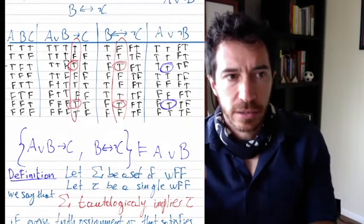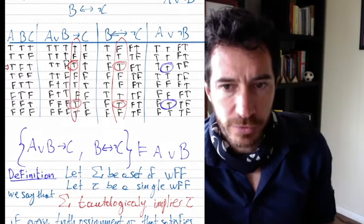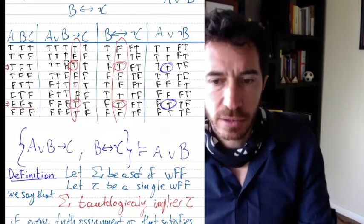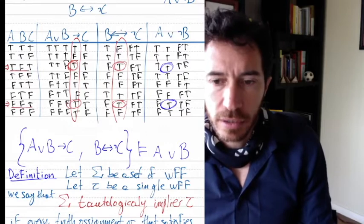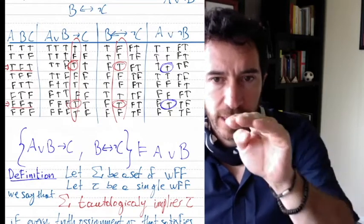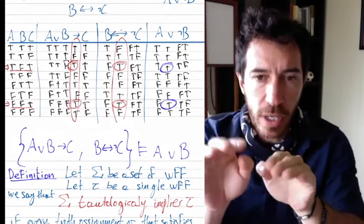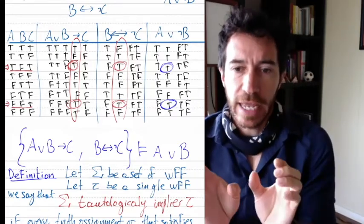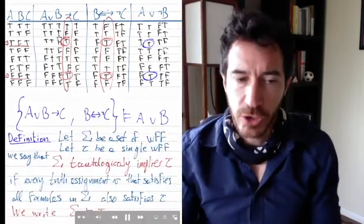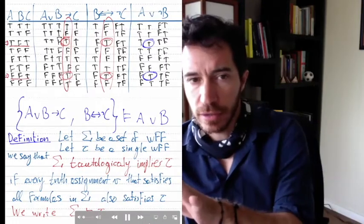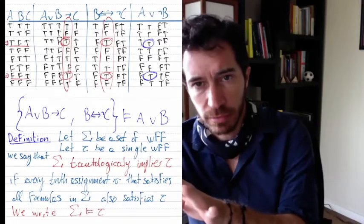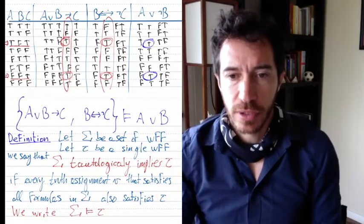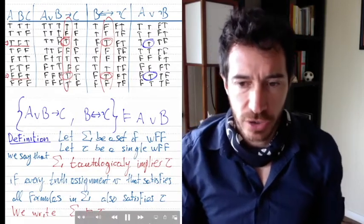When we have this situation, we write that sigma tautologically implies tau using that symbol. In our example, the two underlined truth assignments are the only ones that make sigma — the first two sentences — true, and in those assignments the conclusion tau is also true. That's what tautological implication is.